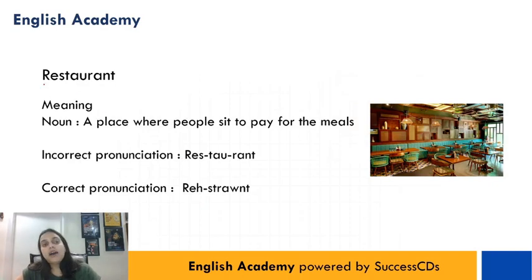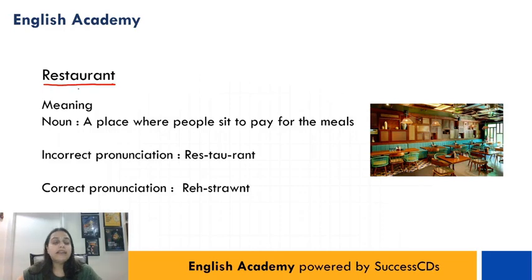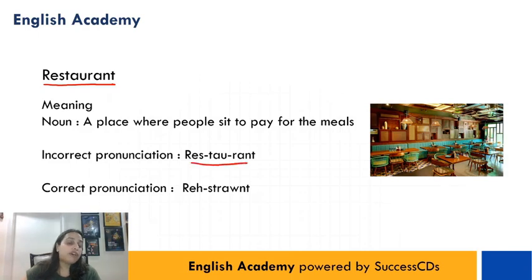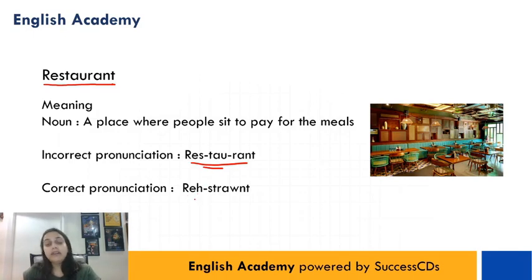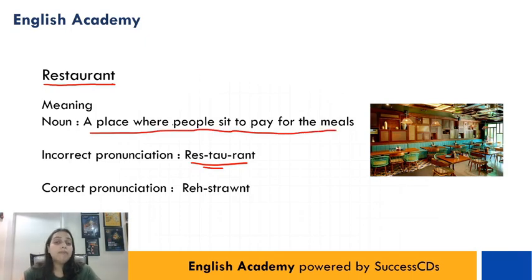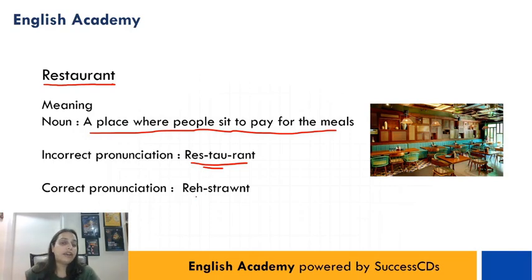The next word is R-E-S-T-A-U-R-A-N-T. Usually log isse pronounce karte hain 'restaurant', but iski correct pronunciation is 'restaurant'. Aur iska matlab hota hai a place where people sit to pay for their meals. Toh aap jab bhi bahar khana khane jayen, aap 'restaurant' nahi, aap jaate hain 'restaurant'.